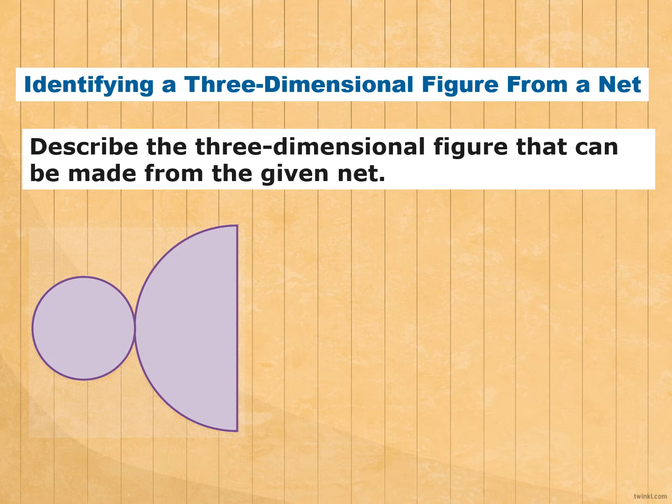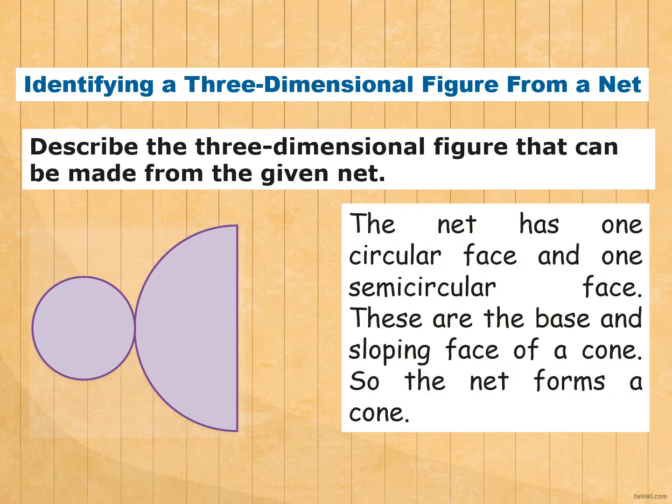How about this one? Correct. It is a cone. The net has one circular face and one semicircular face. These are the base and sloping face of a cone. The net forms a cone.